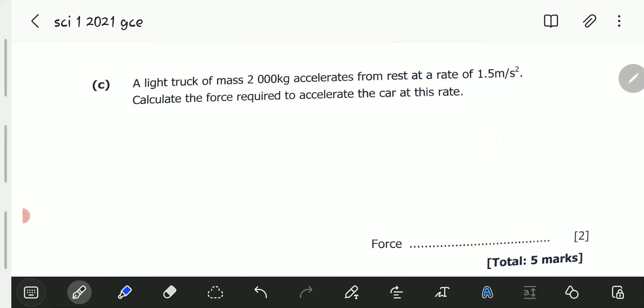We now move to C. C is saying, a light truck of mass 2,000 kilograms accelerates from rest at a rate of 1.5 meters per second squared. Calculate the force required to accelerate the car at this rate. So, force from Newton's second law of motion, we have force is equal to mass times acceleration, which is MA.